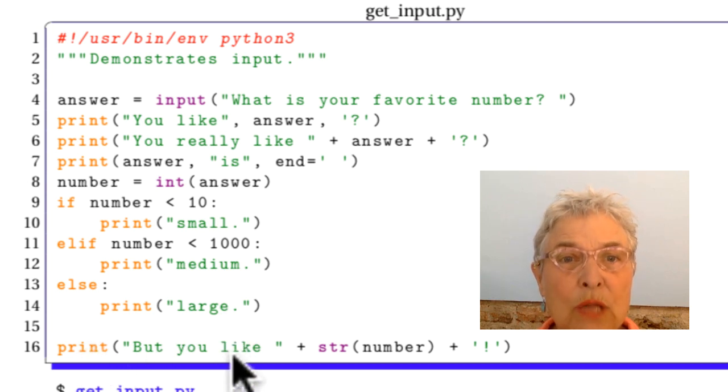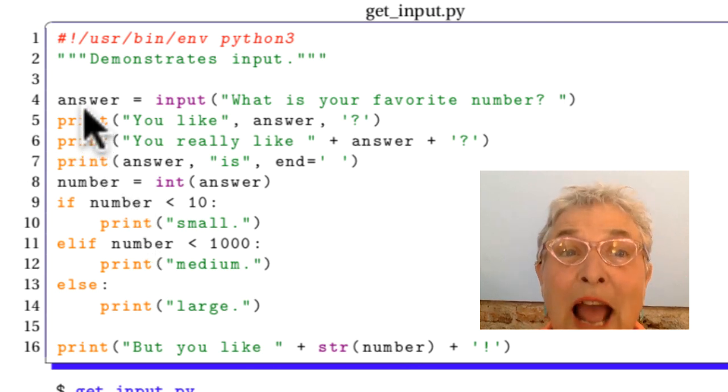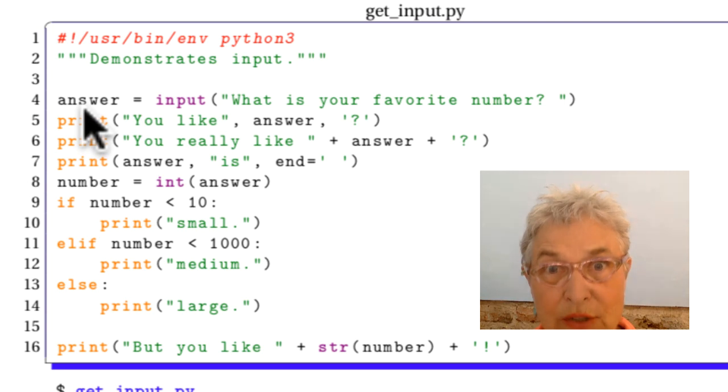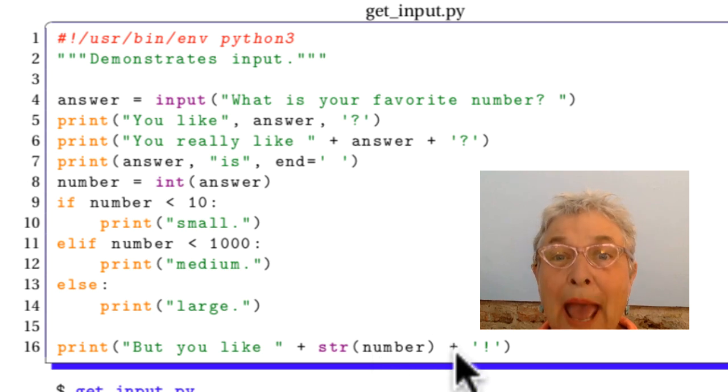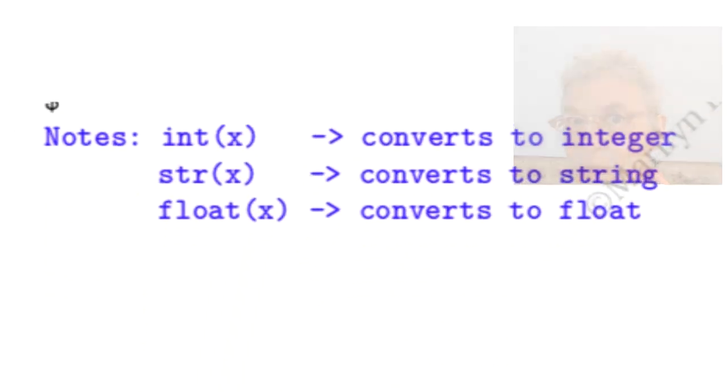And we're going to say, but you like. And I want to print the number. Yeah, it's true that I have it as a string in answer, but I wanted to make this point. If you have an integer and you want to print it or you want to add it to a string, you have to make a string out of it. So we're doing that. Okay, that's a piece of code. It's a little bit faulty, and we'll talk about that in a moment, and maybe you see exactly what's wrong with it.